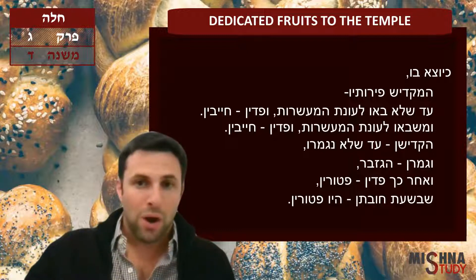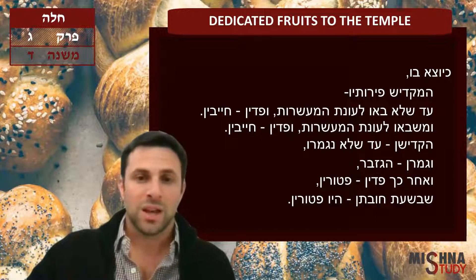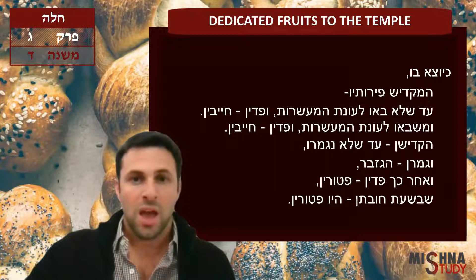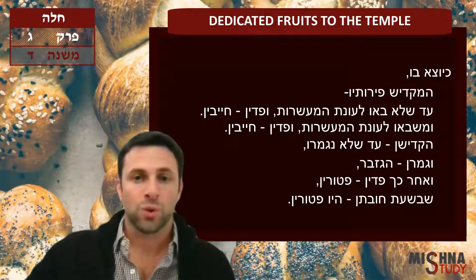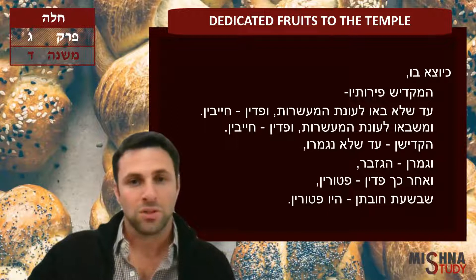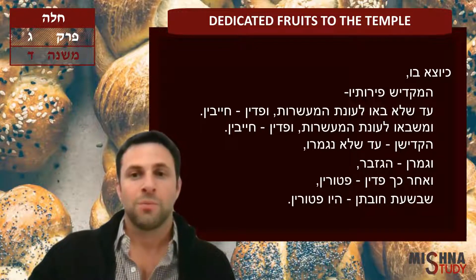The opposite case as well: mishibahu le'onata ma'asrot ufdayan hayavin — if the fruits were in his possession when they reached the onata ma'asrot, the ma'asrot season, and afterwards he redeemed them from Hekdesh — also hayav, obligated. Again, of course, because they reached the onata ma'asrot, the ma'asrot season, while in his possession.